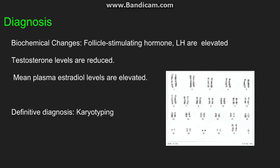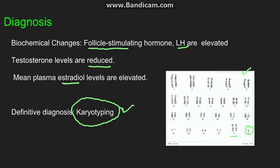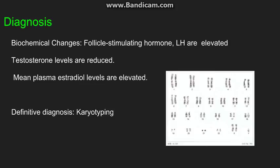For diagnosis, the definitive diagnosis is made by karyotyping. On karyotyping, we can see the presence of a Y chromosome and two X chromosomes, which defines Klinefelter syndrome. For biochemical changes, there is an increase in FSH and LH, a reduction in testosterone level, and elevated plasma estradiol levels. The ratio of estrogen to testosterone defines the degree of feminization in the patient. Remember, the definitive diagnosis of Klinefelter syndrome can only be made on karyotyping.